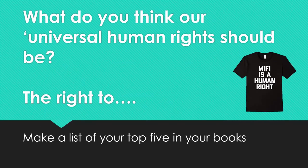Your first task is to think about this question: what do you think our universal human rights should be? The right to this, the right to that — it could be we should have the right to free Wi-Fi, we should have the right to food. The universal human rights are what every human should have access to in the world. I would like you to pause the video now and make a list of your top five in your books.